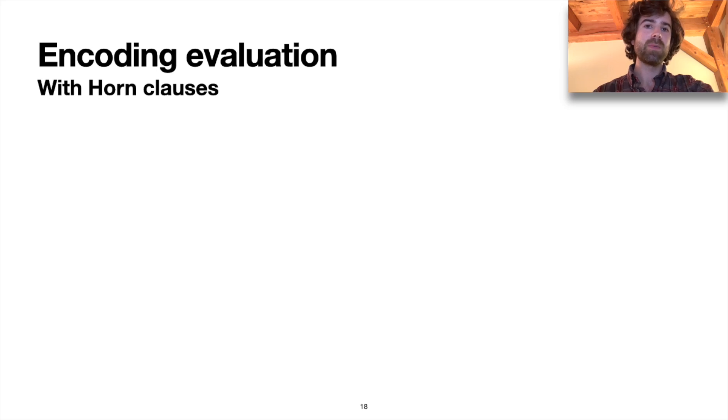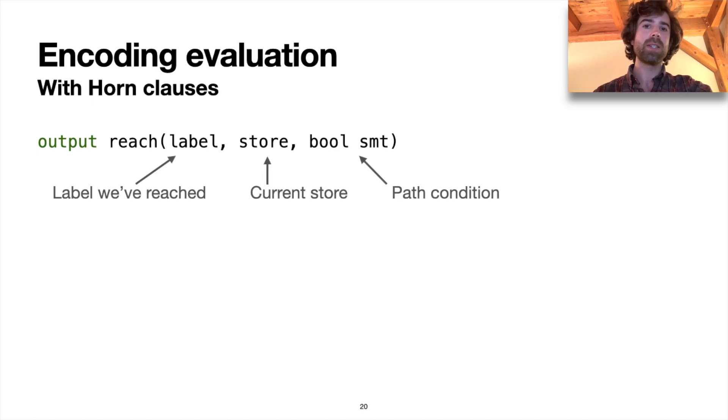Now that we've defined state, we can actually define evaluation itself. And we'll do that through HORN clauses. So these HORN clauses are going to define a relation reach, which just says that the evaluator has reached some label with some store and with some path condition, which is the accumulated constraint that we've gathered up by traversing some path.